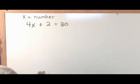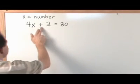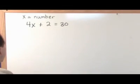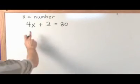Congratulations. You've just translated your first word problem into an equation. Four times the number increased by two is equal to 30. And now all we have to do is solve for our unknown.